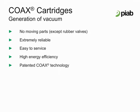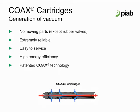COAX combines the internal components of a multi-stage vacuum pump into a single vacuum cartridge. The result is a smaller, more efficient, and more reliable vacuum technology that can provide three times more vacuum flow than conventional systems. The principle of COAX: when compressed air flows through the pump nozzles, air is pulled through with the stream of compressed air, and suction is thus created at the opening of each stage.